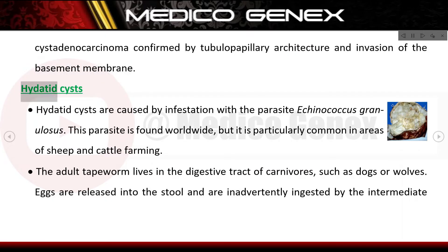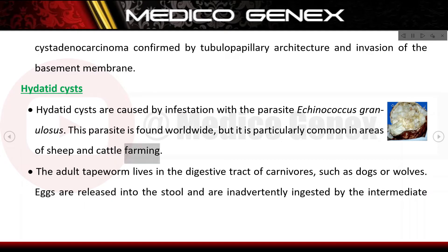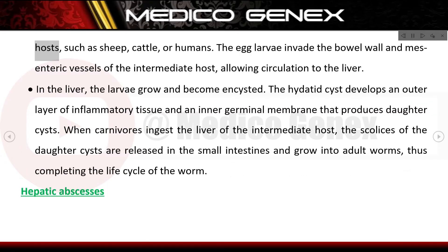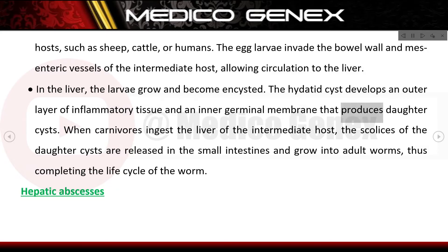Hydatid cysts: hydatid cysts are caused by infestation with the parasite Echinococcus granulosus. This parasite is found worldwide but is particularly common in areas of sheep and cattle farming. The adult tapeworm lives in the digestive tract of carnivores such as dogs or wolves. Eggs are released into the stool and inadvertently ingested by intermediate hosts such as sheep, cattle, or humans. The egg larvae invade the bowel wall and mesentery vessels, allowing circulation to the liver, where they grow and become encysted. The hydatid cyst develops an outer layer of inflammatory tissue and an inner germinal membrane that produces daughter cysts, completing the life cycle.